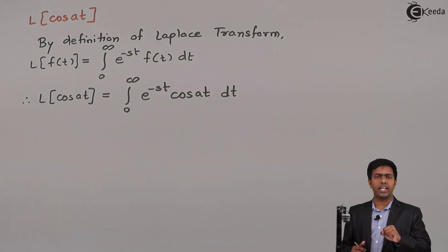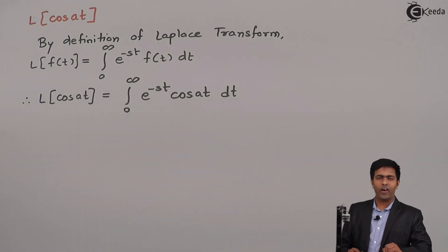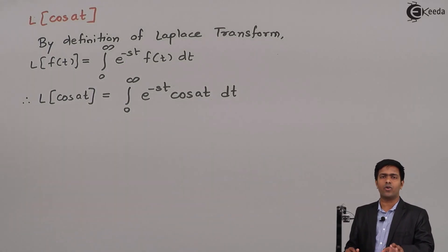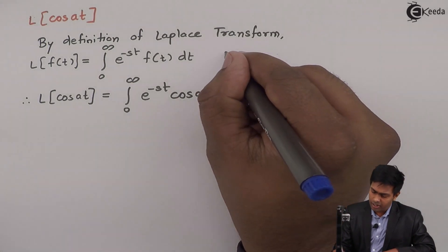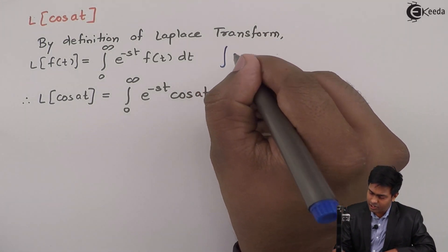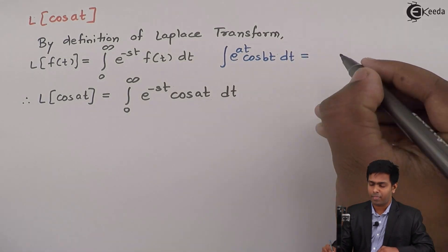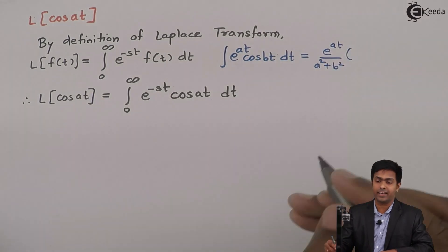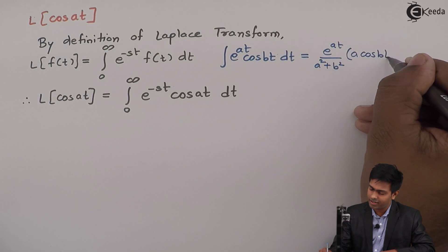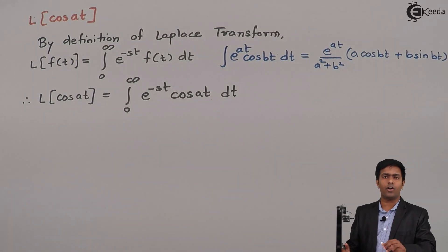Now, to find the Laplace of cos(AT), we have to solve this integration with respect to t. To find the value of the integral of e raised to minus st times cos(AT), we are going to use a property of integration. The property is: the integral of e raised to AT times cos(BT) dt equals e raised to AT divided by (a² + b²), times (a·cos(BT) + b·sin(BT)).